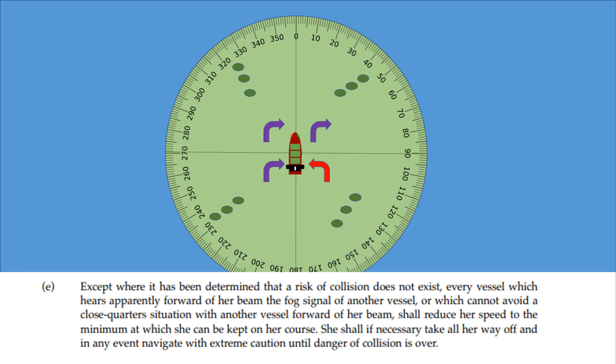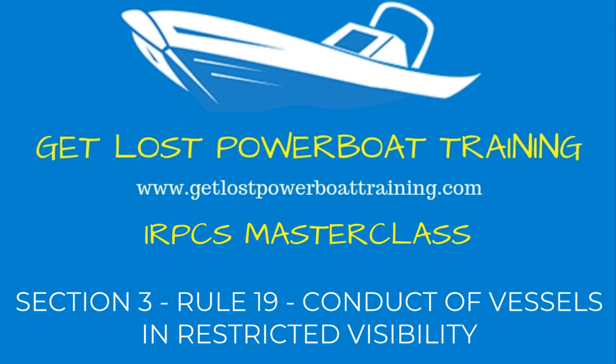So, there we have it. That's rule 19. Quite a big rule. It's the reason that the steering and sailing rules part B are split into three sections, because it discounts half of the rules, all of those rules in section 2. It goes into a lot of detail on how we need to be using radar, which means we now need to understand radar fully as well. So, I hope you find that useful. The next section of our videos now deals with lights and shapes.